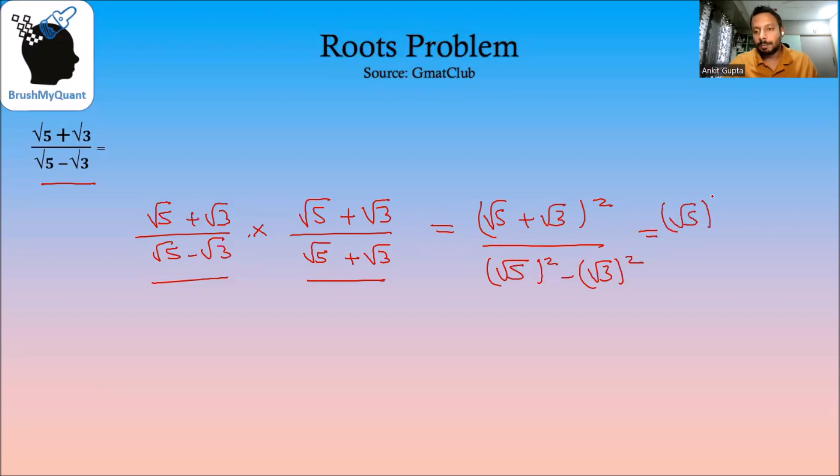So 2 into root 5 into root 3 plus root 3 square which will be 3 itself divided by 5 minus 3.